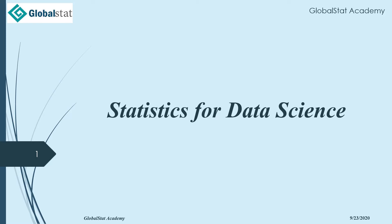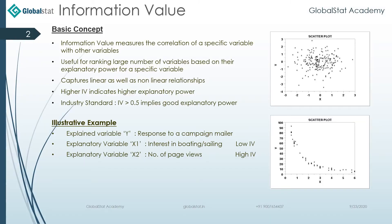Generally, Weight of Evidence helps to transform a continuous independent variable into a set of groups or bins, and based on the similarity of dependent variable distributions — that is, number of events and non-events — the transformed variable can be a continuous variable with Weight of Evidence values, though it behaves the same as any kind of continuous variable.